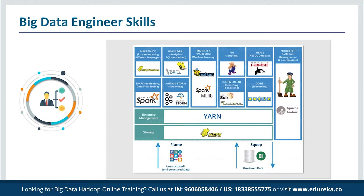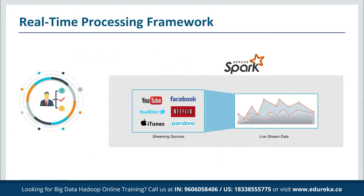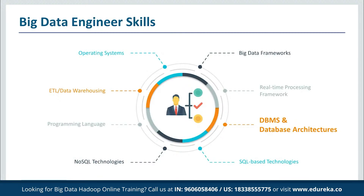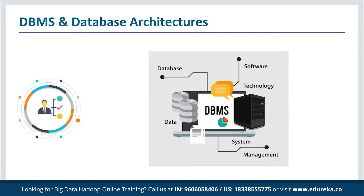The next skill is real-time processing framework. Real-time processing with quick actions is the need of the hour — whether it is to detect fraudulent transactions in a credit card system or a recommendation system, each of them needs real-time processing. Apache Spark is one such distributed real-time processing framework used rigorously in the industry, and it can be easily integrated with Hadoop leveraging HDFS. Next, database management systems and architecture: a DBMS stores, organizes, and manages a large amount of information within a single software application. Data engineers need to understand DBMS to manage data efficiently and allow users to perform multiple tasks with ease.